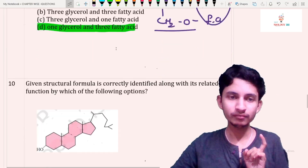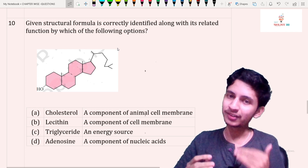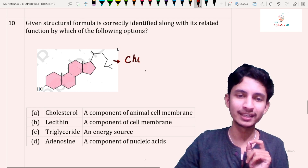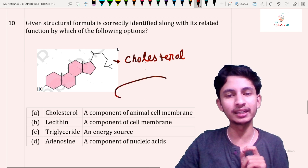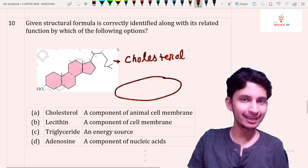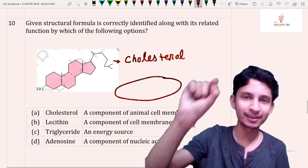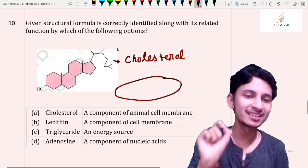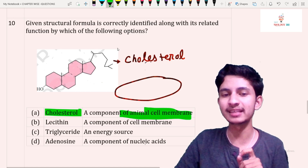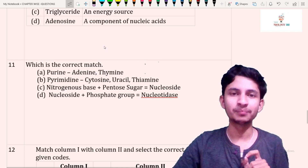Question number ten: match the structural formula with its related function. This NCERT diagram shows the structure of cholesterol. Cholesterol is present in our cell membrane — the fluid mosaic model of the cell membrane given by Singer and Nicholson. The membrane is a lipid bilayer with an outer and an inner layer, and cholesterol is present there. Answer: option A — cholesterol is a component of the animal cell membrane.